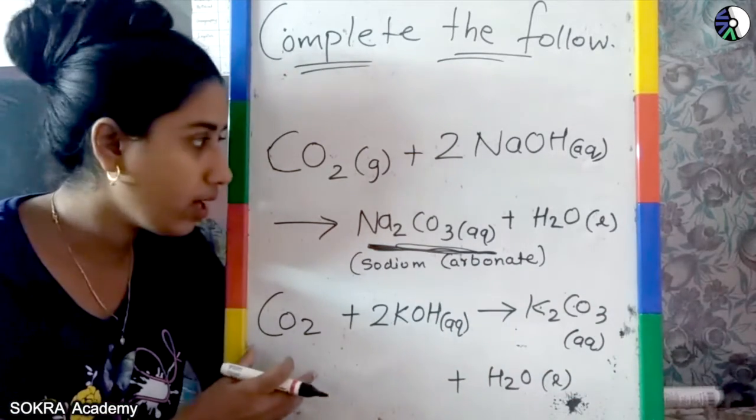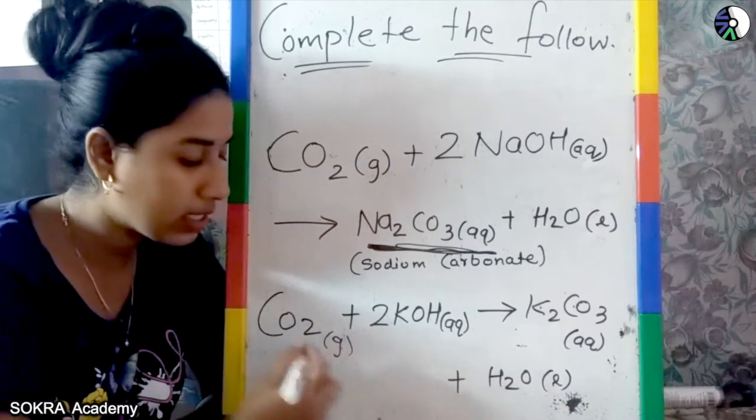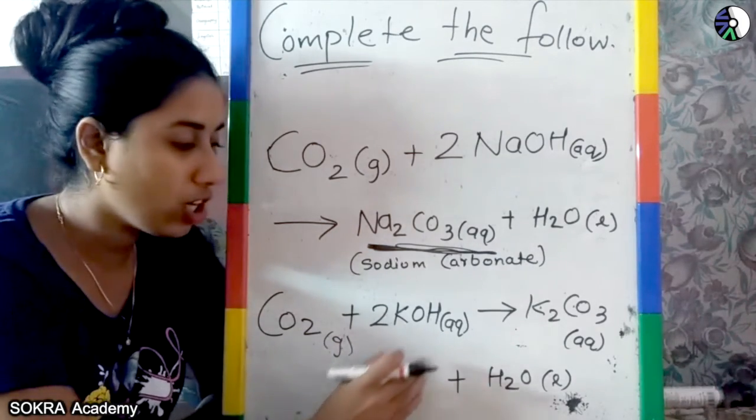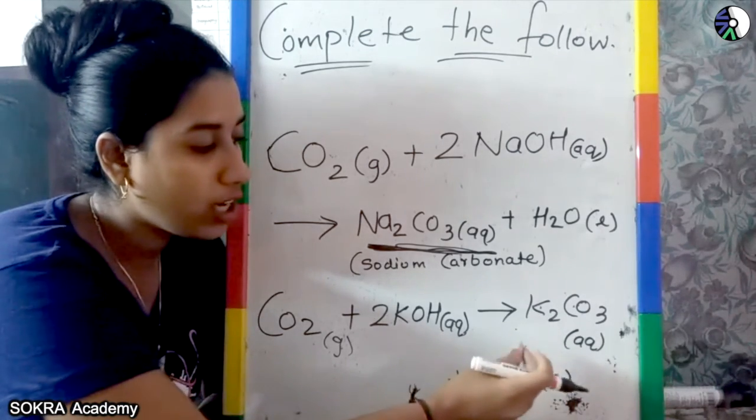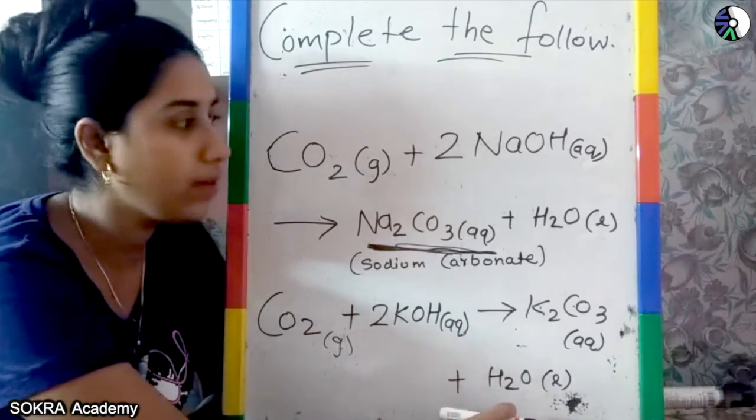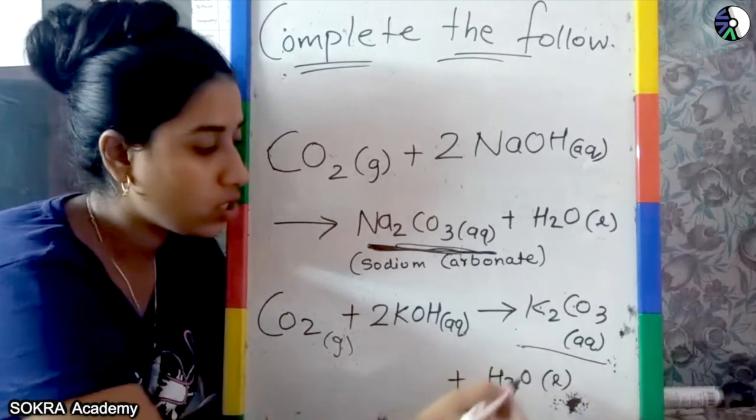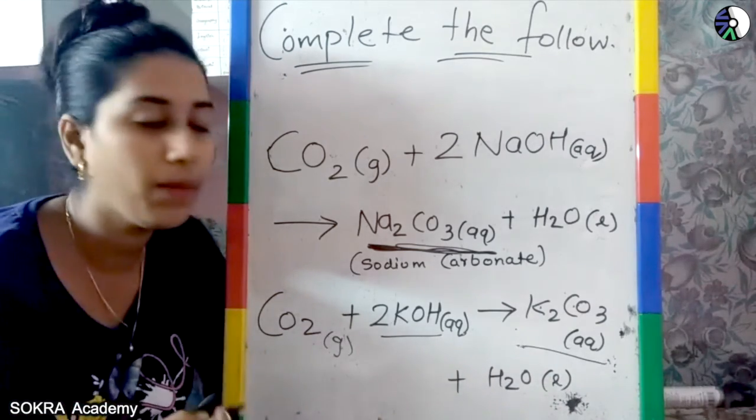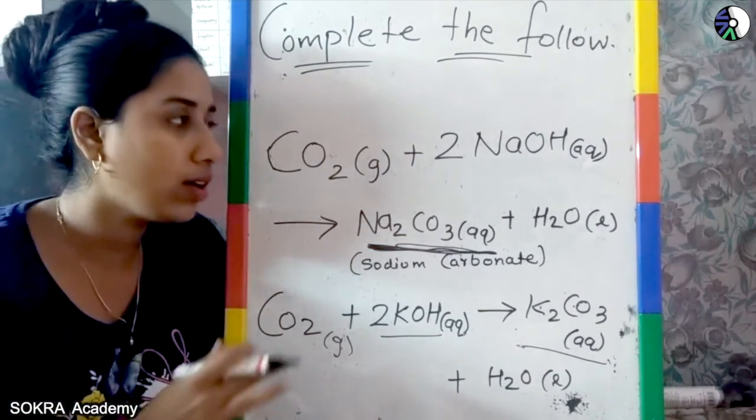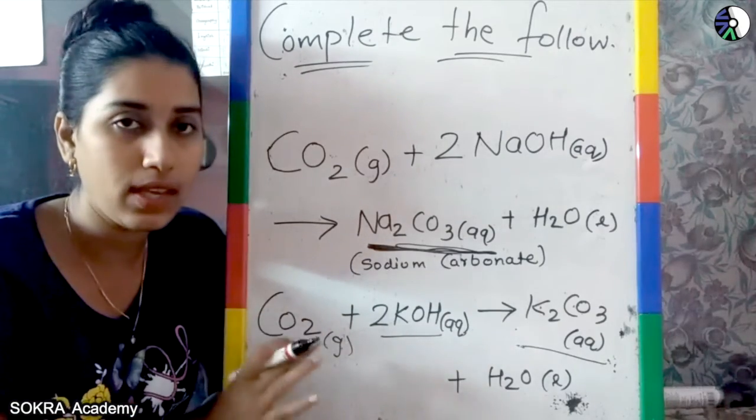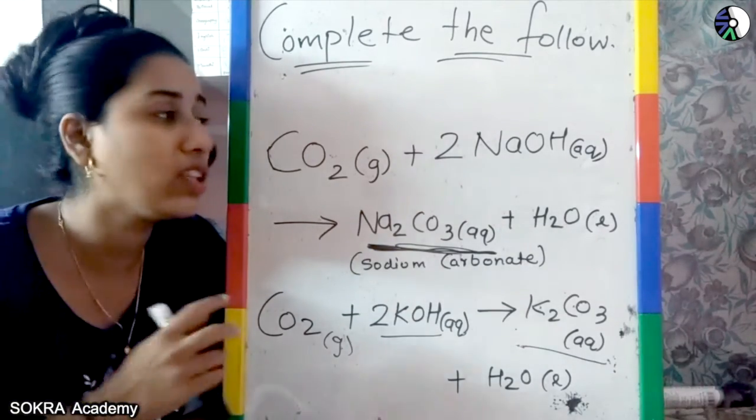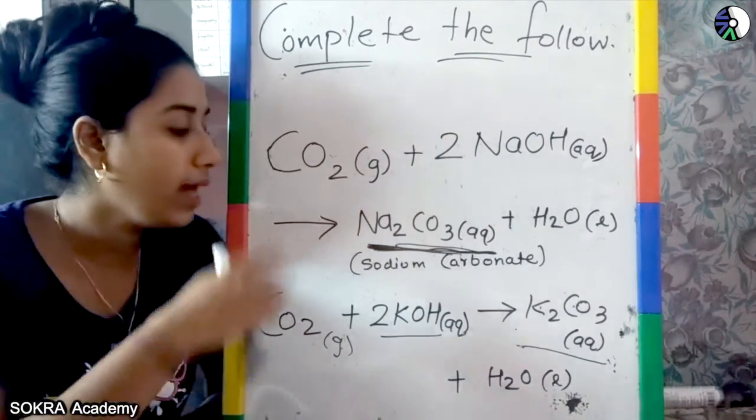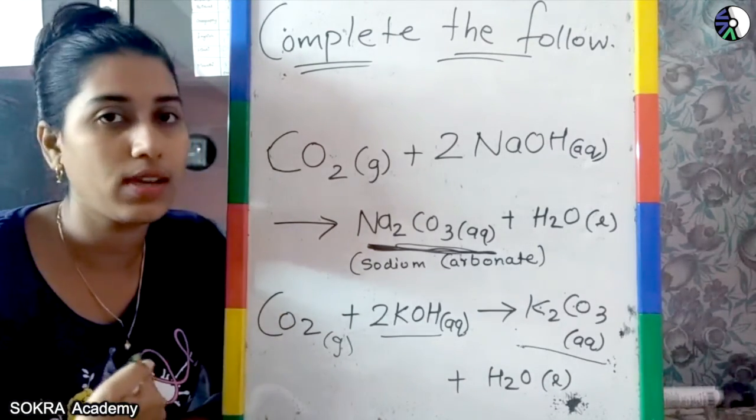Next is what, again we are taking the gas. Yahan pe again, haan pe haam log gas hi leh raha hai, carbon dioxide leh raha hai, plus potassium hydroxide leh raha hai. In the aqueous form it will give what? Potassium carbonate milega, plus water milega. So here this is dash, aur may bhi yeh dash ho sakta hai. Koi bhi dash ho sakta hai. So this is up to for your basic, base ke saath agar koi react karega, non-metal oxides of non-metal, so you are getting the salt and water. And these are the reactions which can be asked in your exam. So we are moving toward the next topic. Thank you.